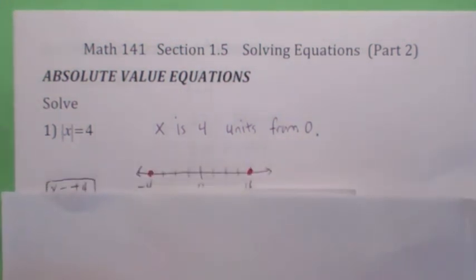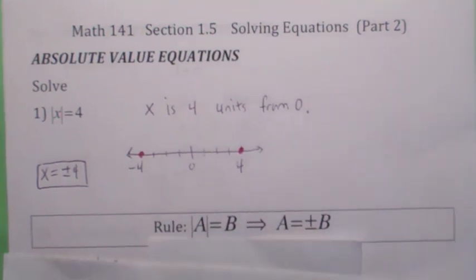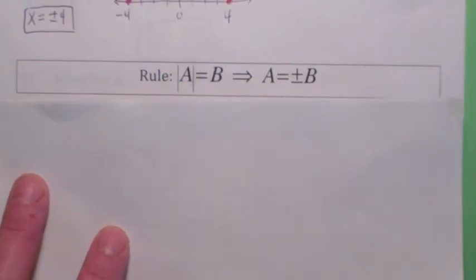The distance that x is from zero is 4. So graphically, think of it like this. It could be 4 units to the right or 4 units to the left. So the solution to this equation would be x equals plus or minus 4. In general, the rule is when you have an absolute value of a equals b, that means that a has to equal plus or minus b.